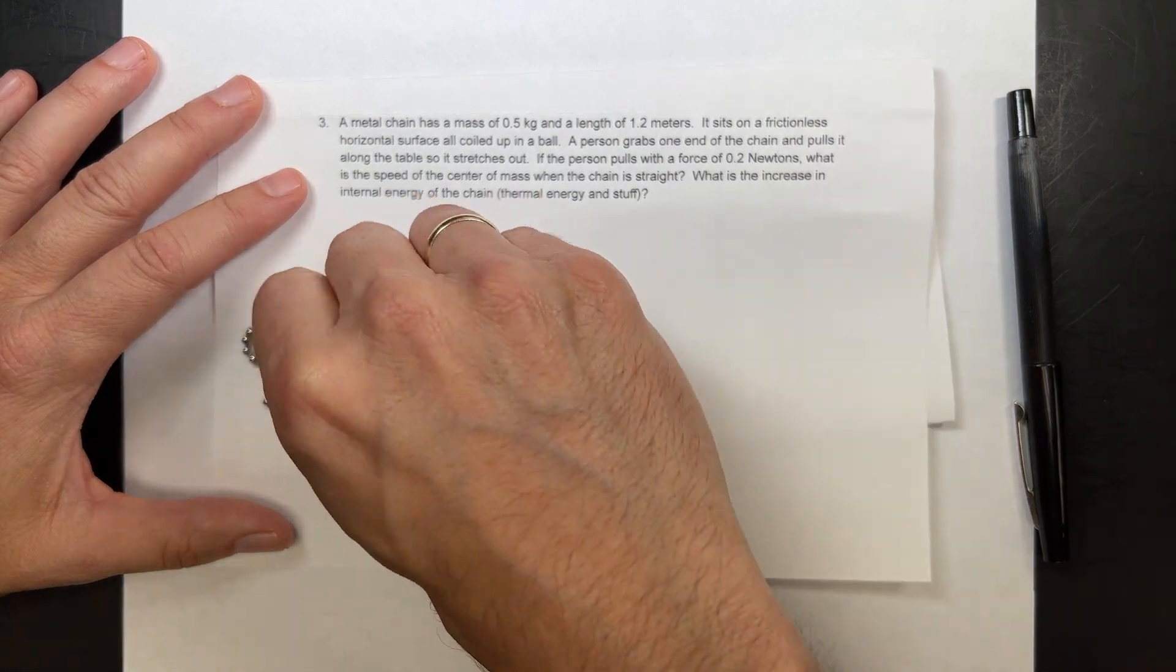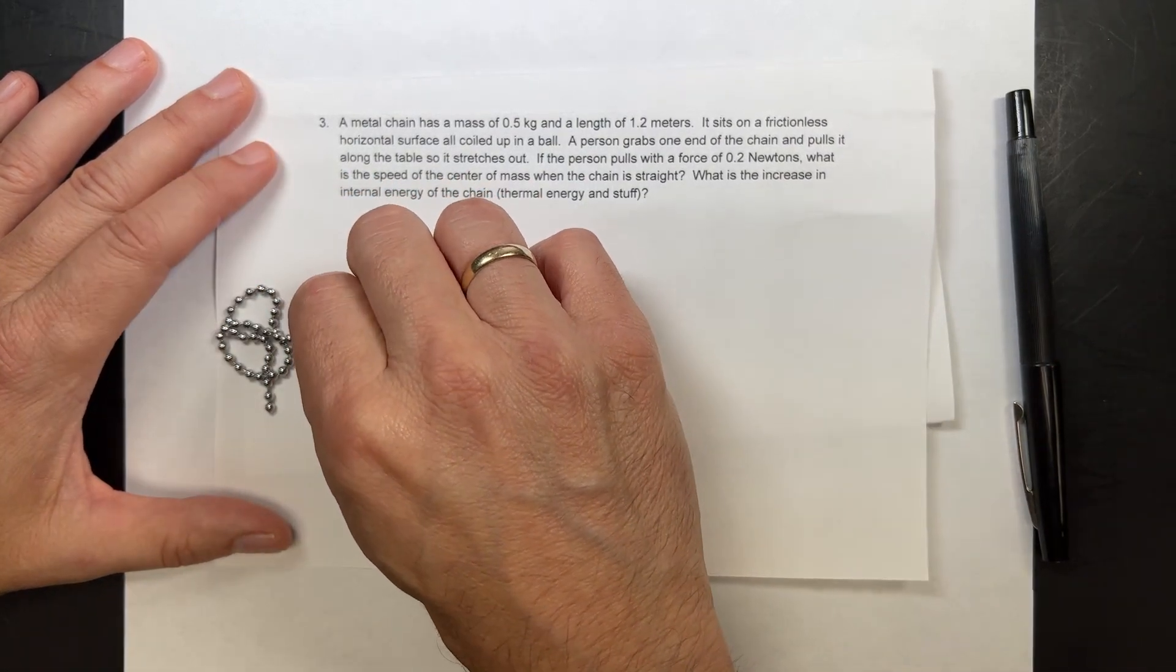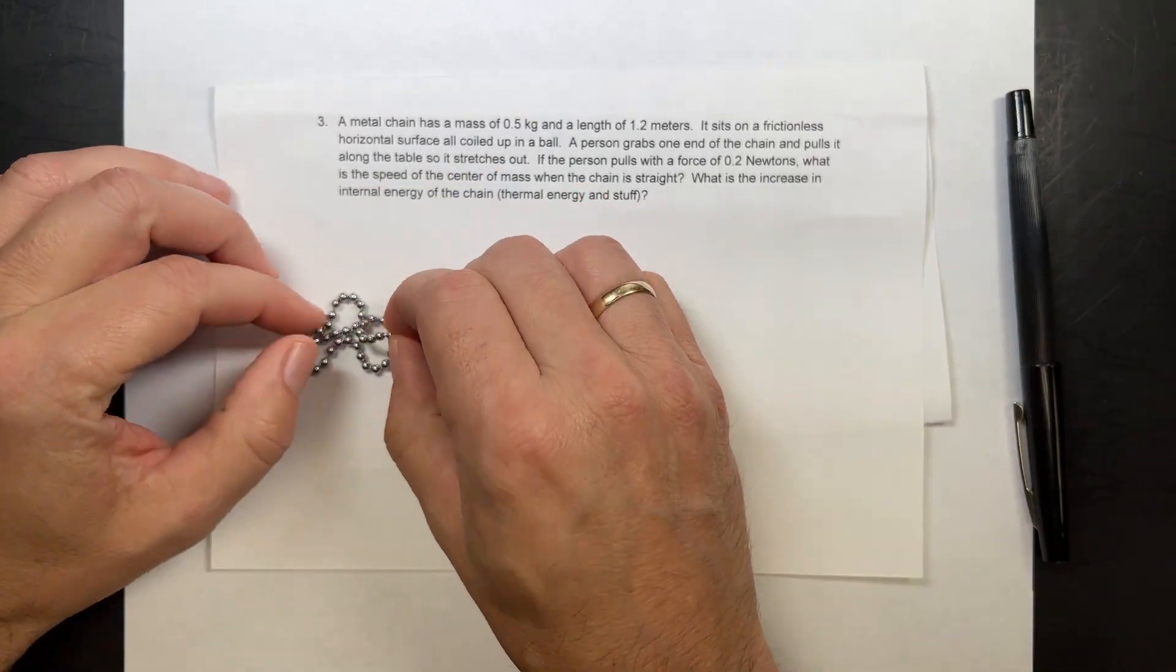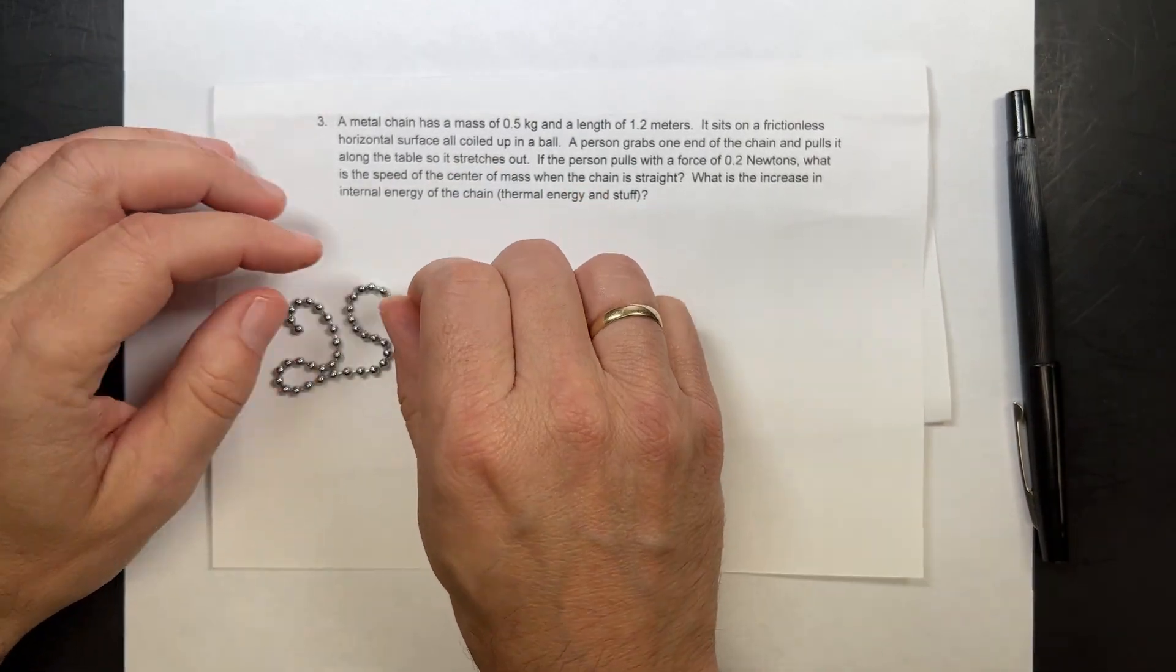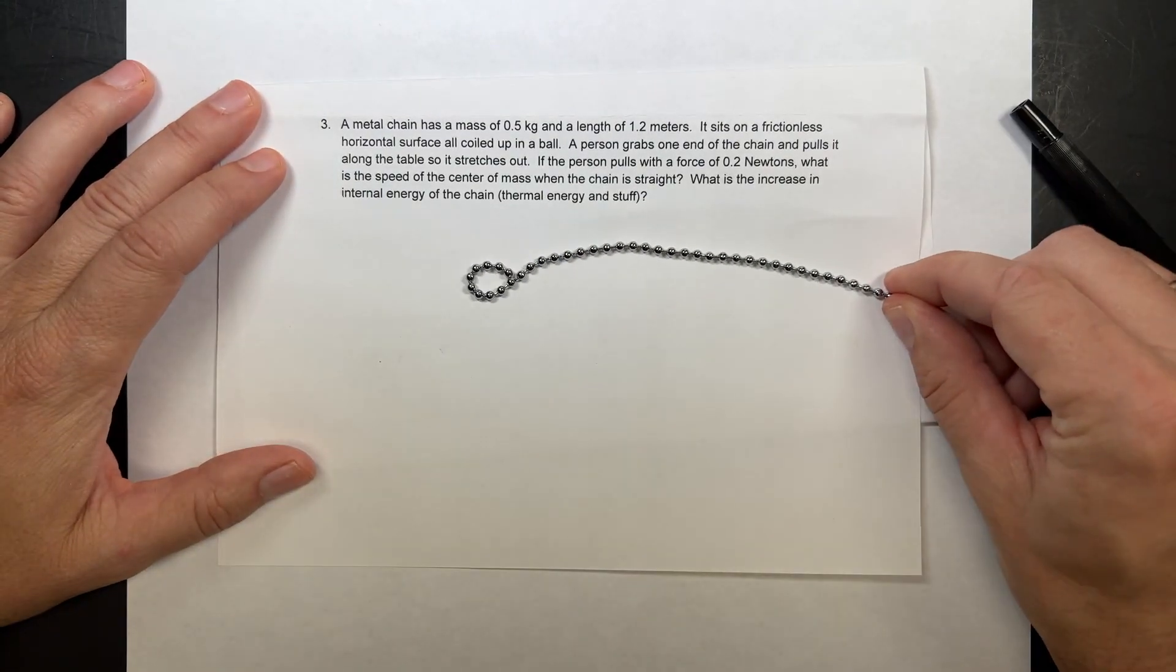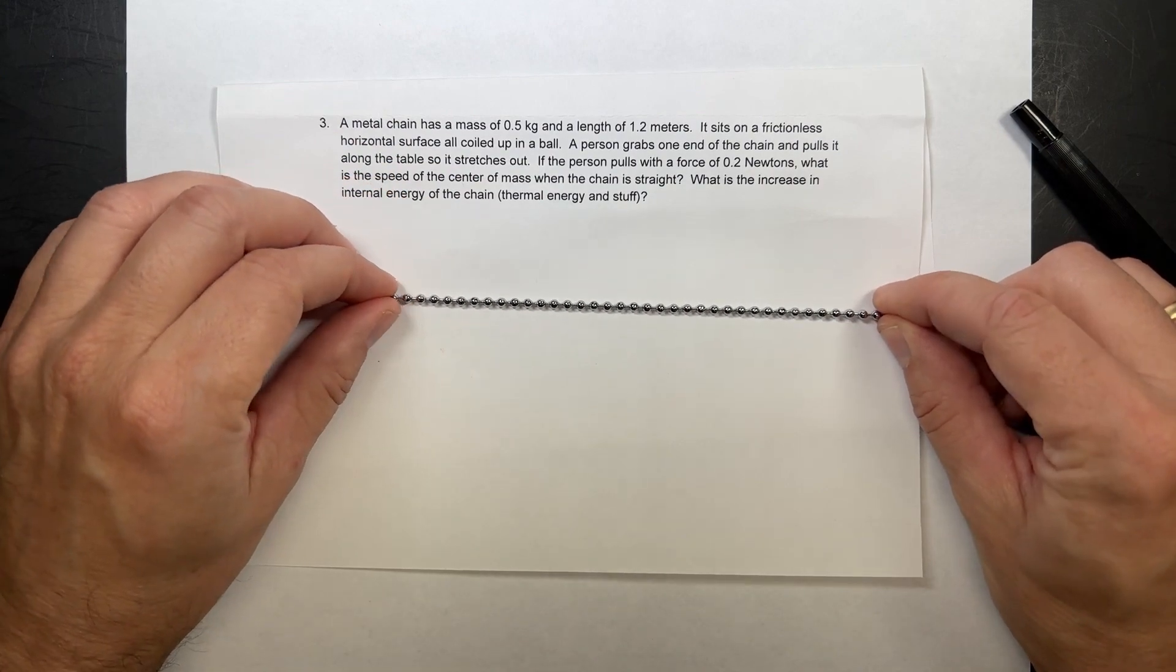So here's how this works. So I'm going to grab like this. It got tangled. That's untangled. Okay, so there's my kind of ball, like that. Now I'm going to pull it, like that. So when it's stretched, how fast is it moving?